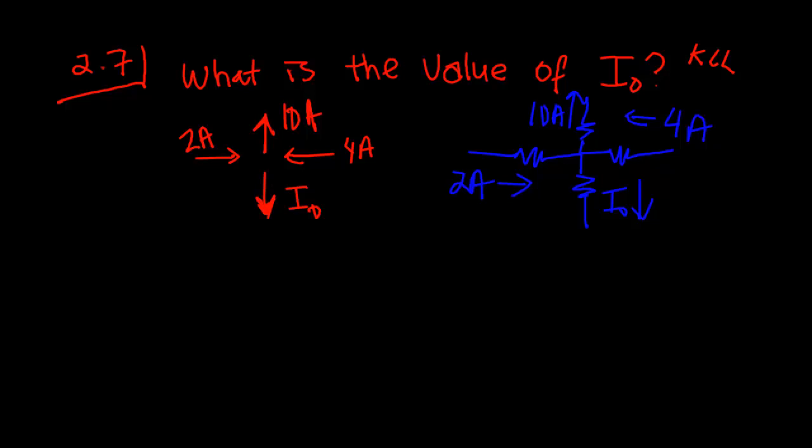Alright, the second one is KCL. As I explained with the rivers, whatever flows into a node has to come out. So whatever rivers flow into a junction, whatever flows out of that junction has to be the sum of both of those other two rivers. So in other words, whatever comes in has to come out.